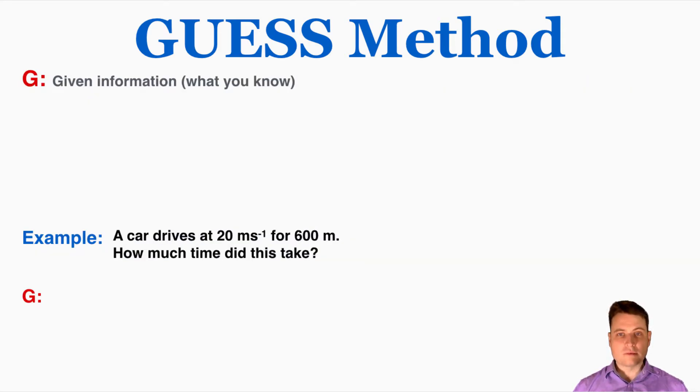So I'm going through the steps of the GUESS method one at a time, starting with writing down my given information, G, and I'm using this example problem for the GUESS method. A car drives at 20 meters per second for 600 meters, how much time did this take? So you might already know how to solve this, this video isn't really about solving this problem, it's about how to use the GUESS method, so just make sure you're understanding each step.